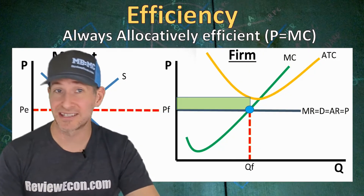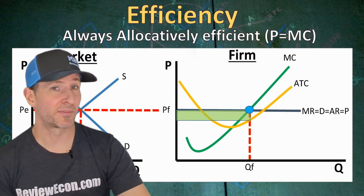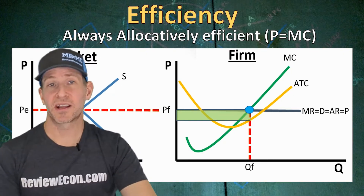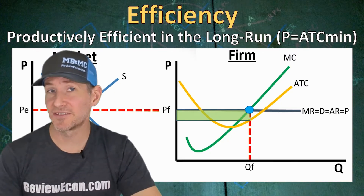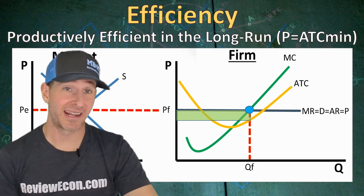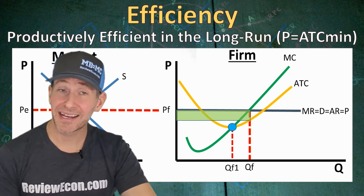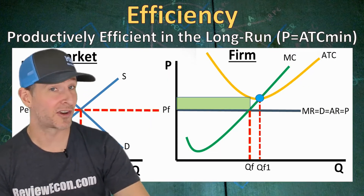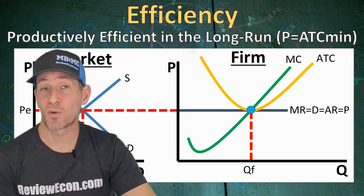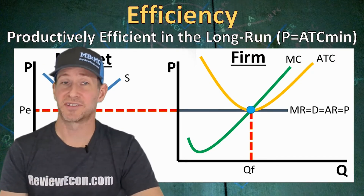But if the firm is earning economic losses, the firm is still allocatively efficient because at QF, the MC equals the price. And the same is true if they are earning economic profits in the short run — they produce where MC equals the price. So perfectly competitive firms are always allocatively efficient. But when it comes to productive efficiency, the firm will only be productively efficient in the long run. Remember, productive efficiency means that a firm is producing at the minimum average total cost. This firm is producing at QF, but QF1 here is the productively efficient quantity, though that quantity would not maximize profit. And if the firm is earning economic losses, the productively efficient quantity will be higher than their current level of output at QF1. So it is only when the firm is in long-run equilibrium that the quantity of output is found at the minimum of the average total cost curve. In the long run, perfectly competitive firms are productively efficient — just not in the short run.